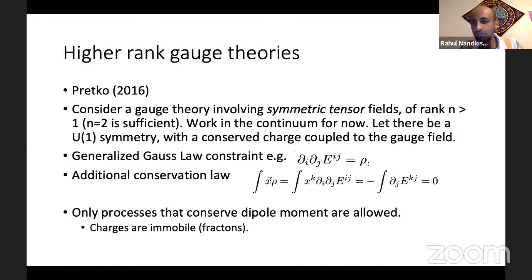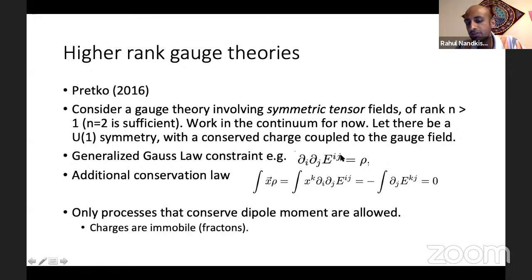There's something that Michael Pretko, who was my postdoc, figured out: suppose you consider a generalized gauge theory where the gauge fields are not vectors, instead they're tensors — specifically symmetric tensors. If you write down gauge theories of symmetric tensors, they'll turn out to have a generalized Gauss-law. So the electric field is now a symmetric tensor. Gauss-law looks something like ∂ᵢ ∂ⱼ Eᵢⱼ = ρ. And this encodes an additional conservation law.